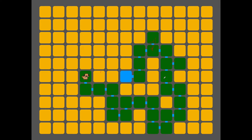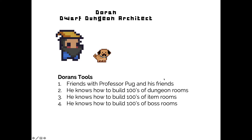So how does this tie into Binding of Isaac? Here we have Doran — he's a dwarf dungeon architect, and his job is to build the Binding of Isaac dungeons. He has a tool set: he's friends with Professor Pug, so he can use the Wandering Pug method when he creates his dungeons. He also knows how to build hundreds of dungeon rooms, item rooms, boss rooms, and all the different types of rooms in Binding of Isaac.